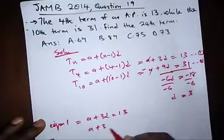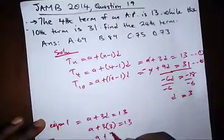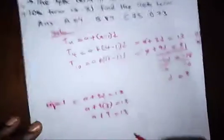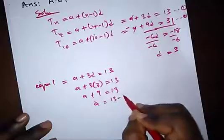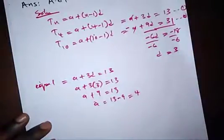So from here, A plus 3 bracket 3 is equal to 13. So we have A plus 9 equal to 13. And A will finally give us 13 minus 9, which is 4. And the question says,